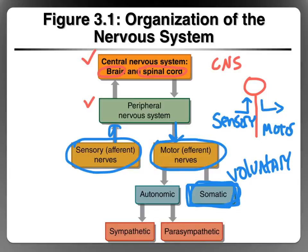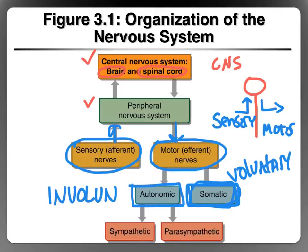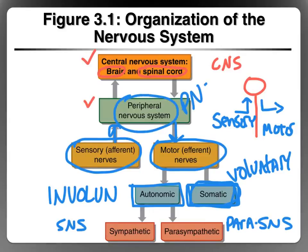What we really haven't talked about yet — and we will talk about more this semester — is the autonomic division of the motor nerves. These are motor nerves that come out again from the CNS but they cause involuntary responses, things you're not consciously deciding to do but that are going on in your body all the time. The autonomic nervous system has two divisions: the sympathetic, which we call SNS, and the parasympathetic, which we'll call para-SNS. I don't call it PNS because it can get confused with peripheral nervous system, so it's best to say para-SNS.